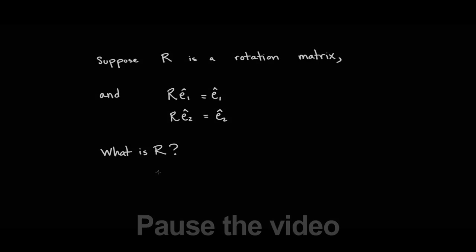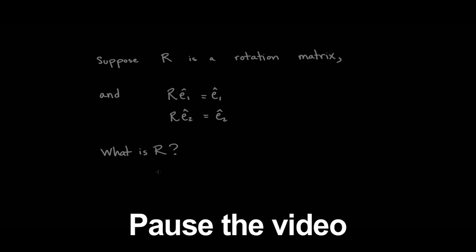Suppose you have a rotation matrix such that e1 and e2 are both eigenvectors with eigenvalue 1. What would this mean about the rotation? Pause the video and think about this. The entire xy plane will be unchanged by this rotation. This is only possible if the matrix is the identity matrix. This is the null rotation. Nothing happens.